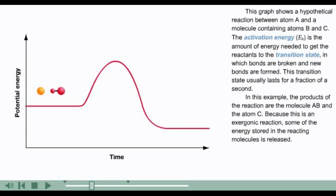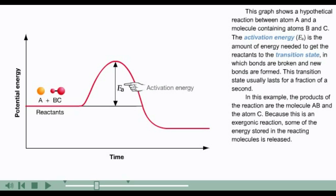This graph shows a hypothetical reaction between atom A and a molecule containing atoms B and C. The activation energy, EA, is the amount of energy needed to get the reactants to the transition state in which bonds are broken and new bonds are formed.